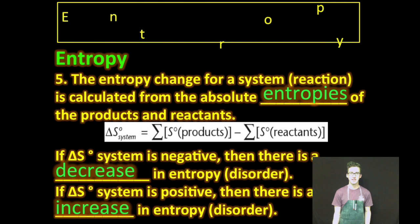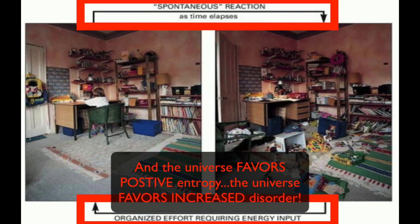Important to recognize that if the delta S of a system is negative, then there's a decrease in entropy. And if the delta S of a system is positive, then there's an increase of entropy. Pause the vid. Stare at this image.